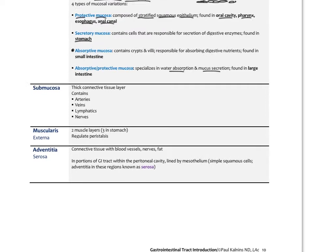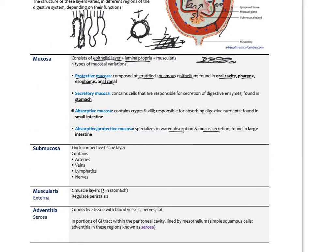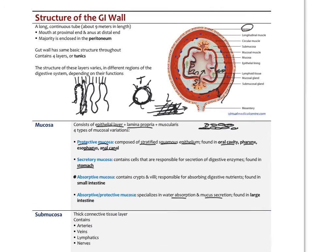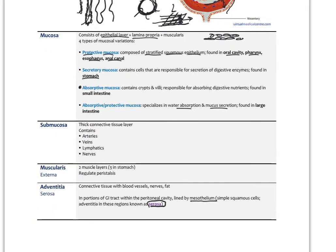On the very outside is the adventitia — connective tissue where blood vessels and nerves come in. In portions of the GI tract within the peritoneal cavity, the adventitia is lined by mesothelium, which is simple squamous cells that are part of the peritoneum. This area is known as the serosa — a special type of adventitia covered by mesothelium. So those are the four basic layers from mouth to anus, with each region specializing in its own way.